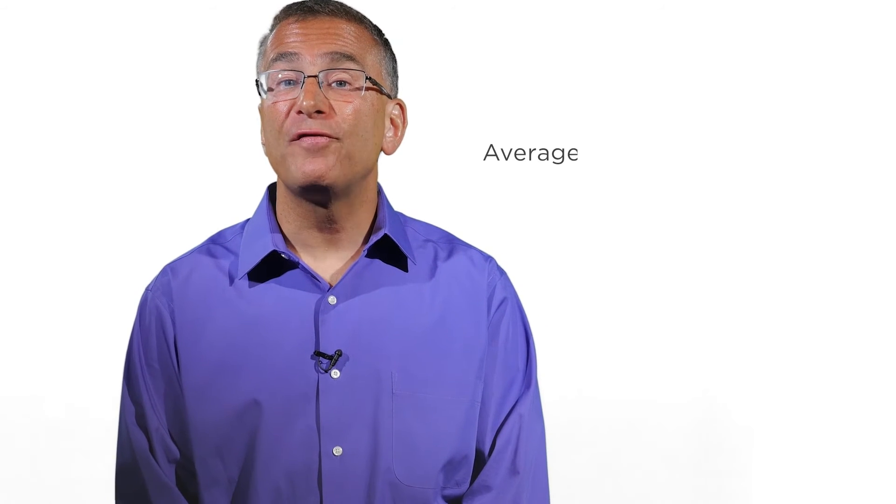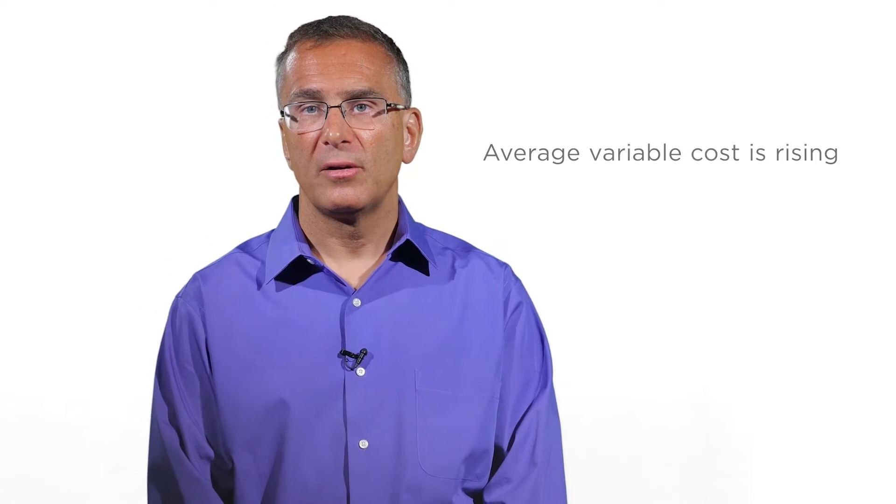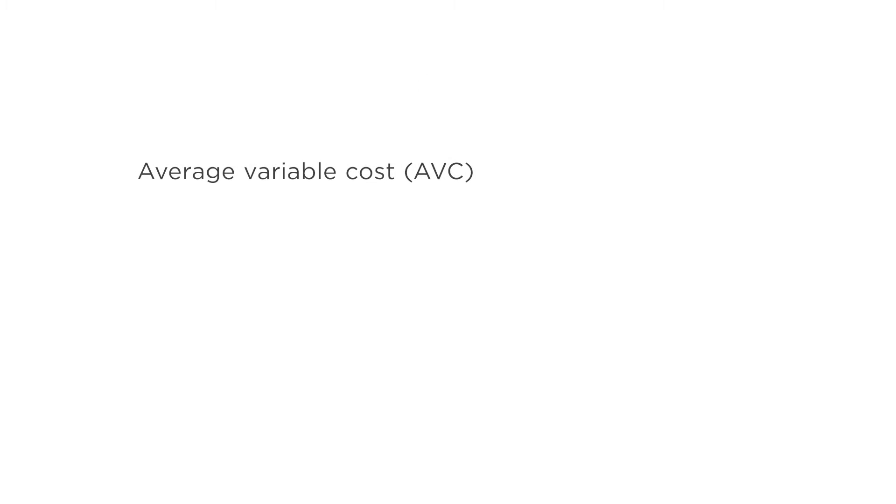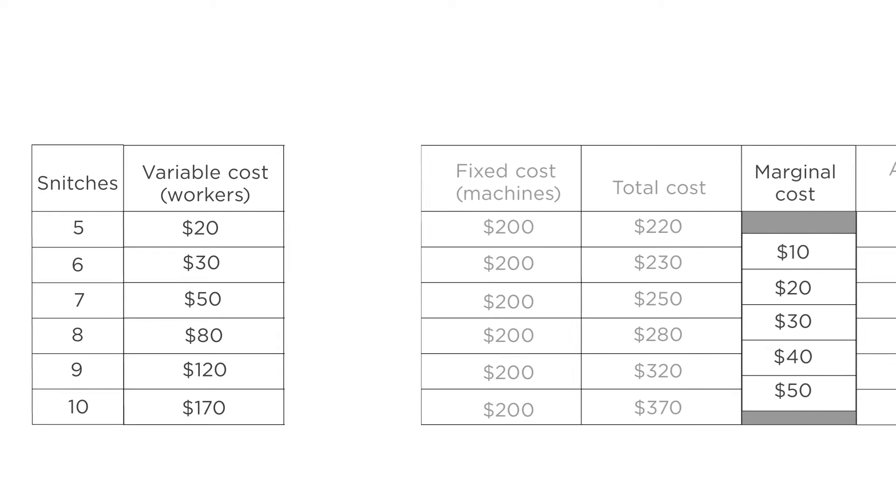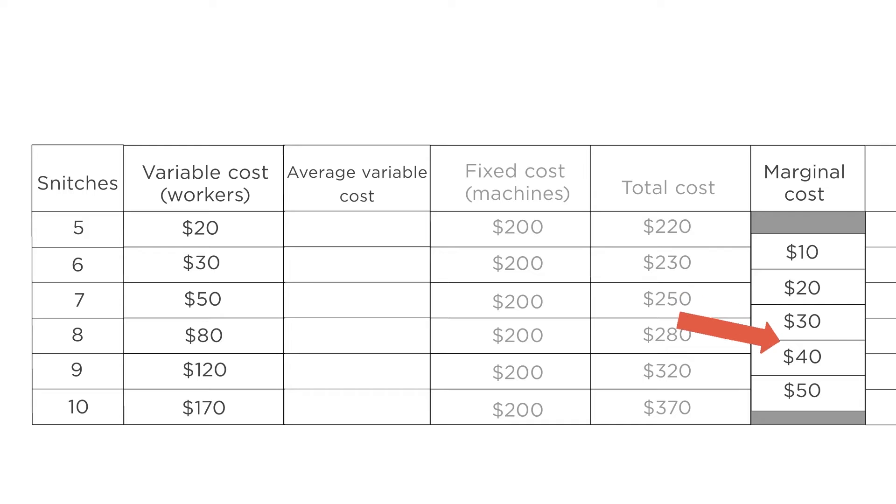Second, as production increases, the average variable cost is rising. Average variable cost is the variable cost divided by the quantity of output. Variable cost is the sum of all the marginal costs. And since we saw earlier that marginal costs rise as production increases, so too will average variable costs rise.